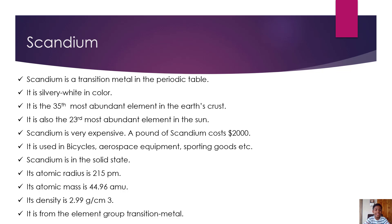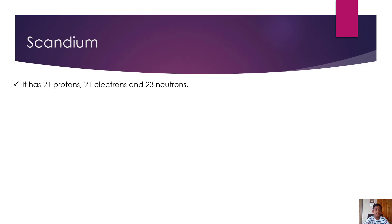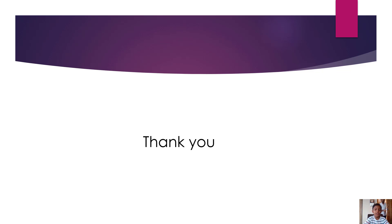It is used in bicycles, aerospace equipment, sporting goods, and more. Scandium is in the solid state. Its atomic radius is 215 picometers, and its density is 2.99 grams per cubic centimeter. It belongs to the transition metal group, with 21 protons, 21 electrons, and 23 neutrons. Thank you.